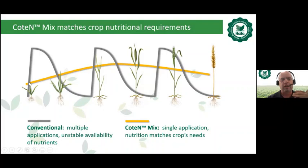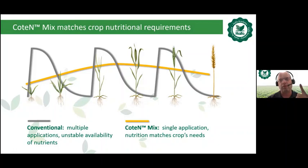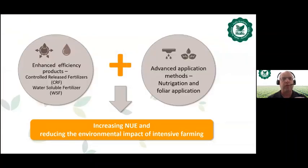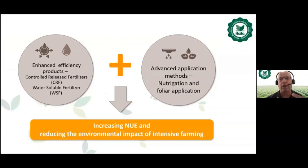If using traditional fertilizer like urea, availability drops after each application and then you must apply again and again. With Multicote technology and Cotton Mix, we can have a single application for the whole crop cycle — which sounds almost unbelievable but is demonstrated by results. Using enhanced efficiency products such as CRF or water-soluble fertilizers combined with enhanced application methods like foliar application increases nutrient use efficiency and reduces the environmental impact of intensive farming.